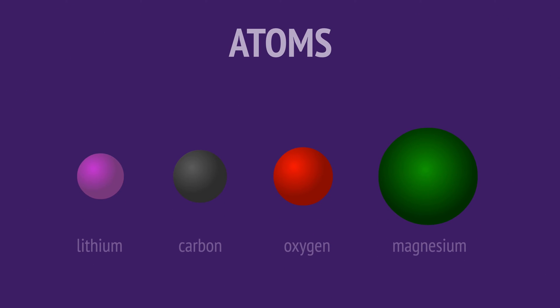Atoms are the smallest unit of matter identified by the number of protons in their nucleus, the atomic number. Carbon atoms have 6 protons, oxygen atoms have 8, and magnesium atoms have 12.